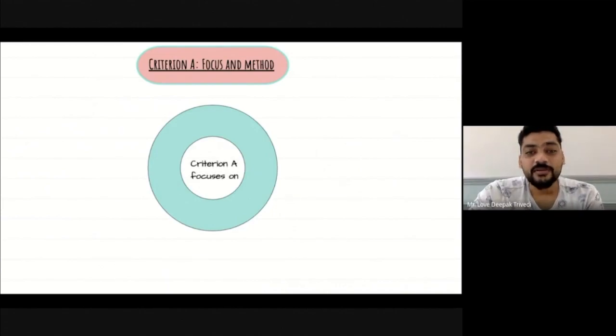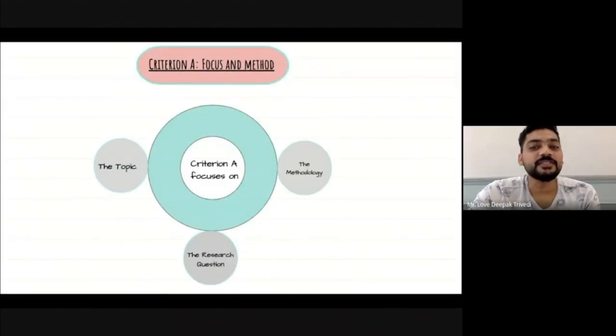Criteria A focuses on few important parameters, one of which is the topic that you have chosen, the student has chosen for the investigation. Second would be the research question itself. We will talk about each of the topics in detail. And third is about the methodology of your implementation.